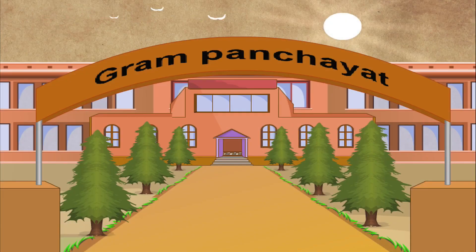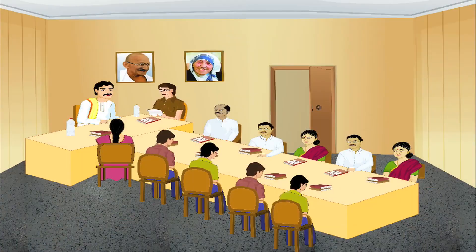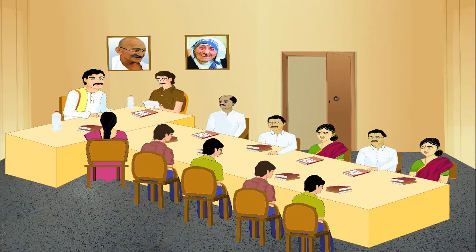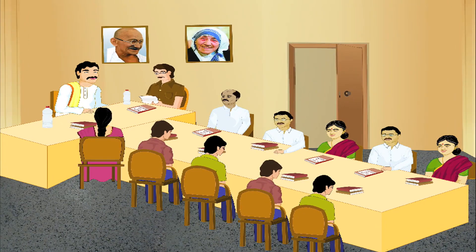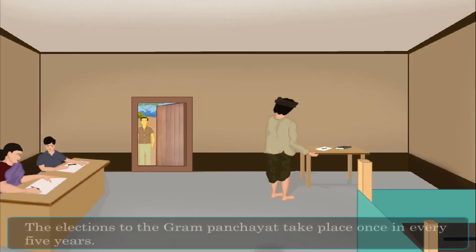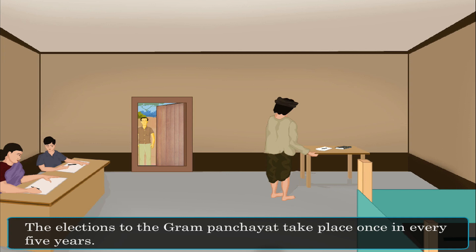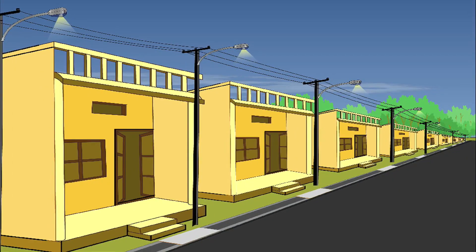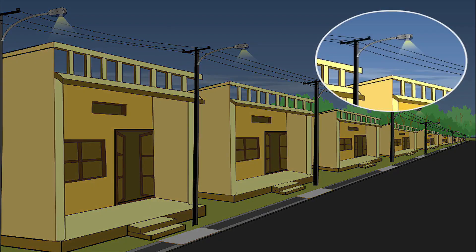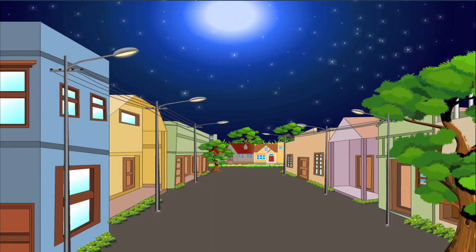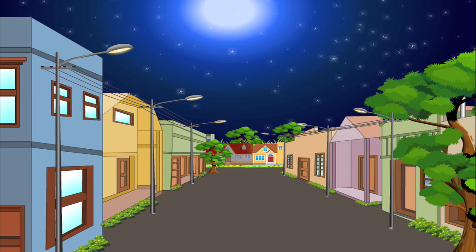A gram panchayat consists of between 5 and 17 members elected from the wards of the village. Normally, elections to the gram panchayat take place once every 5 years. To establish a gram panchayat in a village, the population of the village should be at least 500 people of voting age. To ensure proper distribution of power, the villages are divided into several wards, and each ward elects one member to the village panchayat.